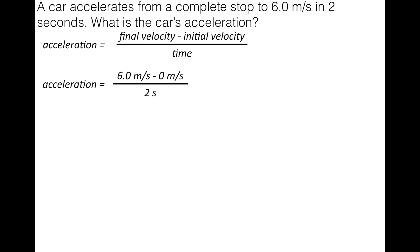A car accelerates from a complete stop to 6 meters per second in 2 seconds. What is its acceleration? We write the formula: a = (v₂ - v₁) / t. Substituting: final velocity is 6 m/s, initial velocity is 0 m/s, and time is 2 seconds. So: (6 - 0) / 2 = 3 meters per second squared. Acceleration is measured in meters per second squared, or distance divided by time squared.